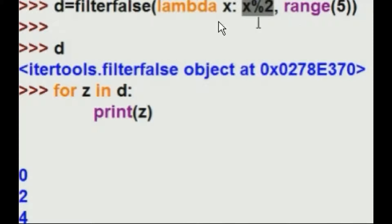I want to see every one of the x's that when you do an x mod 2 gives me a false, a 0. Store those in d, then iterate through d, print those out, and this is what you're going to get. 0, 2, and 4.